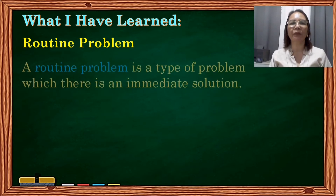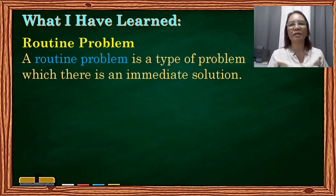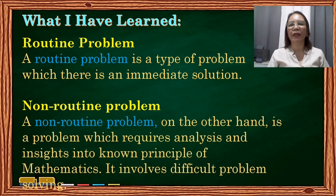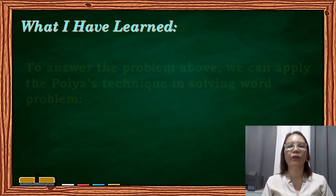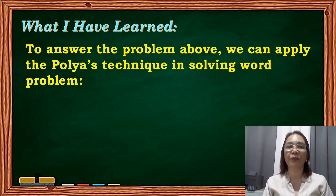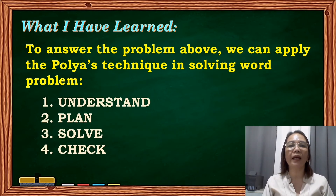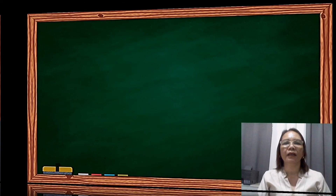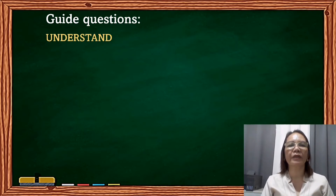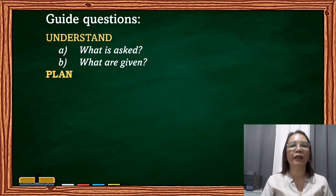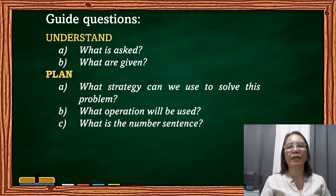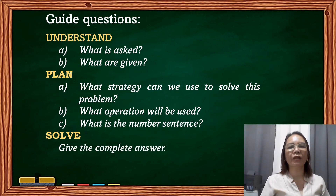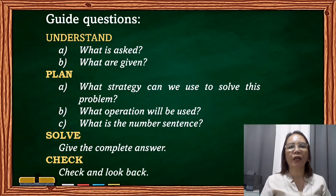So what have you learned today? A routine problem is a type of problem which has an immediate solution. A non-routine problem is a problem which requires analysis and insights into known principles of mathematics and involves difficult problem solving. We also have the steps to follow in solving word problems: understand, plan, solve, and check. In understanding, ask what is asked and what are given. In planning, know what strategy and operation to use. In solving, give the complete answer. In checking, check and look back.